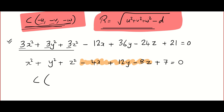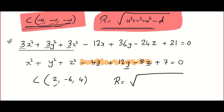Now, to find the center directly: look at the coefficient of x, y, z, divide by 2 and take the negative. That gives center = (2, −6, 4). For the radius, square all those quantities — they become positive: 4 + 36 + 16 − 7 = 49. So the radius is √49 = 7. That's a very basic problem.